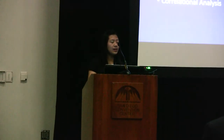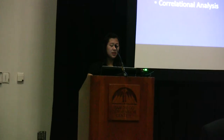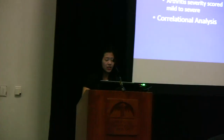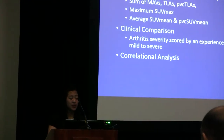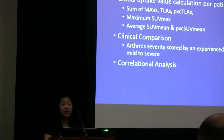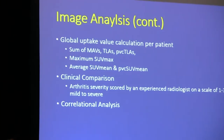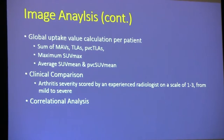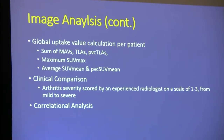Global uptake value calculations were done by summing the MAVs, TLAs, and PVC TLAs of each patient, taking the maximum SUV max and averaging all the SUV means and PVC SUV means of all the joints. As a basis of clinical comparison, arthritis severity was scored by an experienced radiologist for each scan on a scale from 1 to 3, with 1 being mild and 3 being severe, and this was used for subsequent correlational analysis.